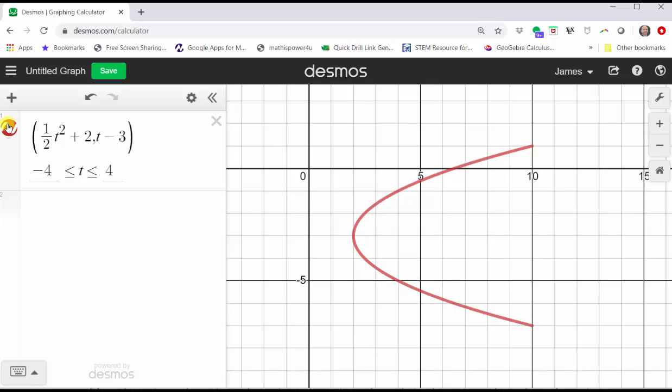So now we have a nice graph of the curve. Let's change the color though. To do this, click and hold on the red circle on the left, and then click on a new color. Let's click black. Close this window by clicking outside the window.